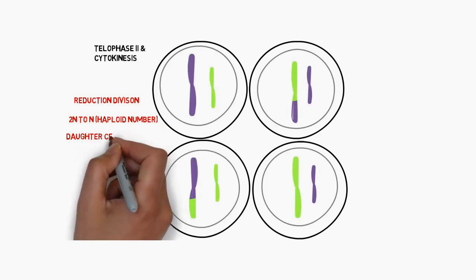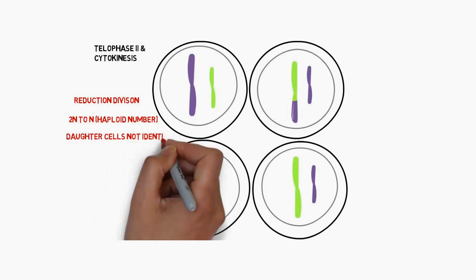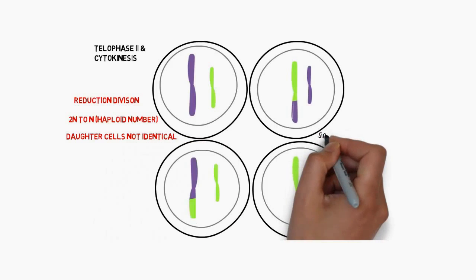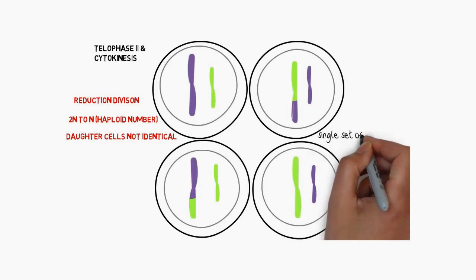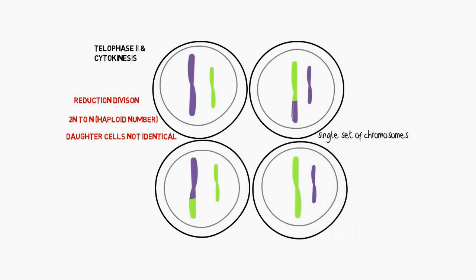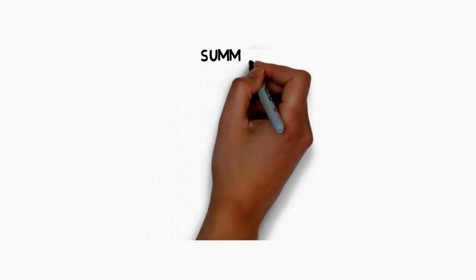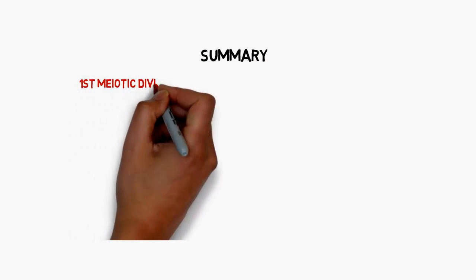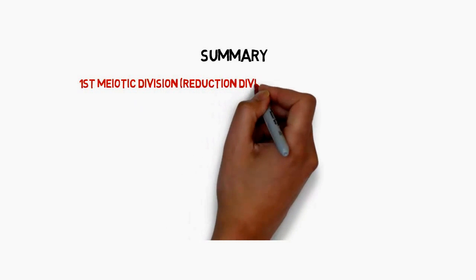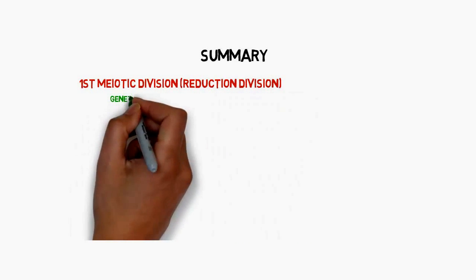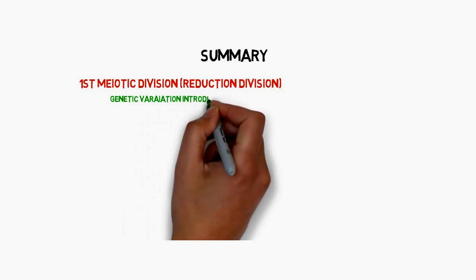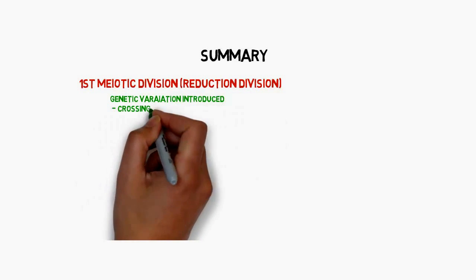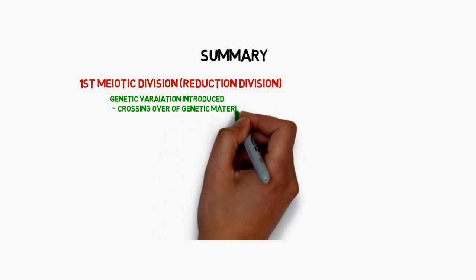So we have reduction division, going from 2N to N — a haploid number. The daughter cells are not identical. Haploid means a single set of chromosomes. In summary, there are two meiotic divisions. The first meiotic division is the reduction division, where we go from 4N after duplication in interphase down to 2N. Genetic variation is introduced through crossing over of genetic material between homologous chromosomes.